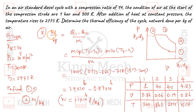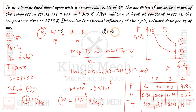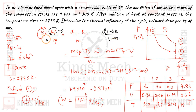Work done per kg is calculated as Q_supplied minus Q_rejected divided by mass. That is QS minus QR divided by mass. Since we need work done per unit mass per kg, we take mass m equal to 1 kg.